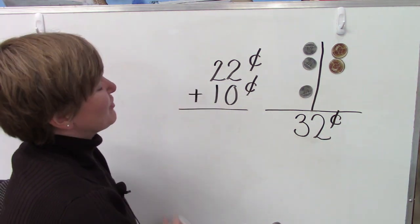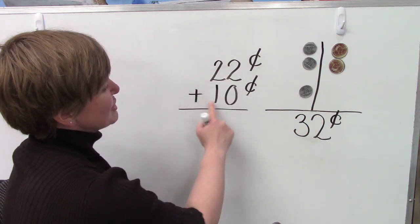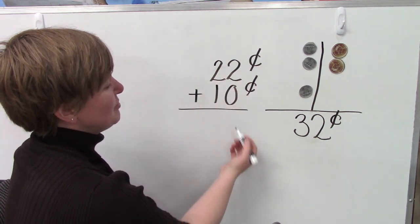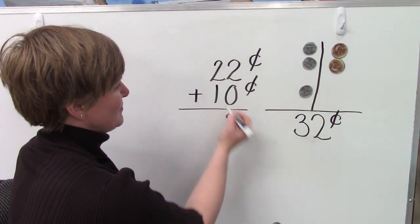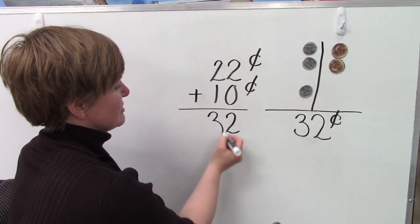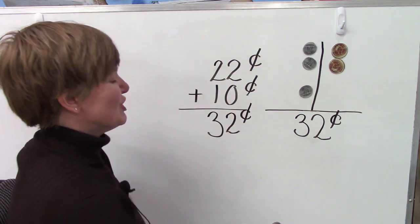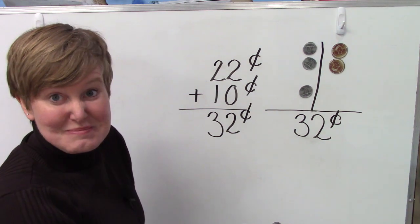Let's try it over here. 22 plus 10, 2 plus 0 is 2. 2 plus 1 is 3. 32 cents. They're both the same.